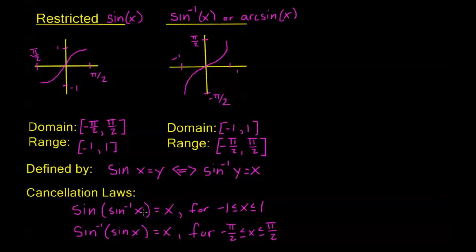There's a difference between these two cancellation laws. In the first one, if x is outside of negative 1 to 1, it's not going to be defined because sine inverse is undefined outside negative 1 to 1. In the second one, however, if x is outside of negative pi over 2 and pi over 2, this is still defined and has a solution — it's just not going to equal x. I'll give you an example of that in a moment.